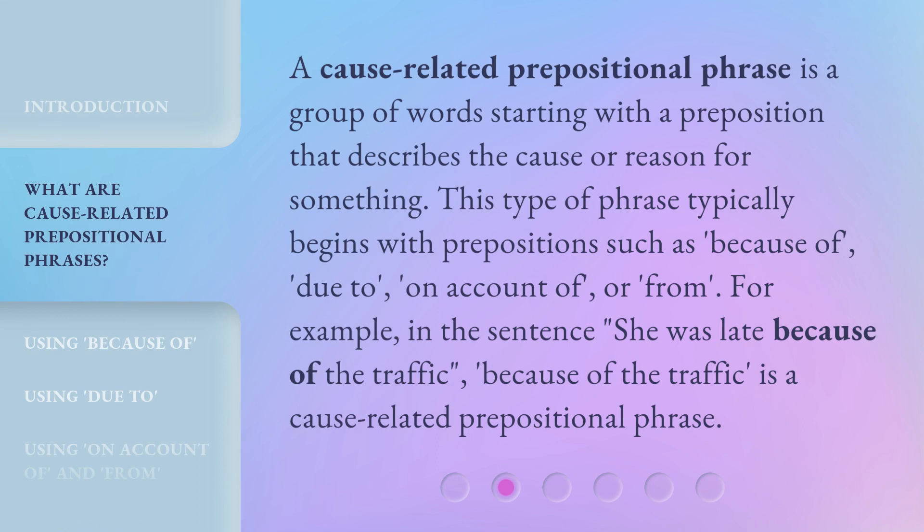A cause-related prepositional phrase is a group of words starting with a preposition that describes the cause or reason for something. This type of phrase typically begins with prepositions such as 'because of,' 'due to,' 'on account of,' or 'from.' For example, in the sentence 'She was late because of the traffic,' 'because of the traffic' is a cause-related prepositional phrase.